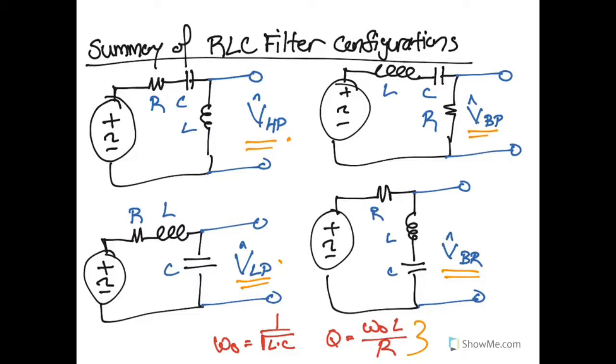And regardless of what filter type is selected, the corner frequency, or the center and resonant frequency of those filters, is going to be the square root of the inductance times the capacitance.